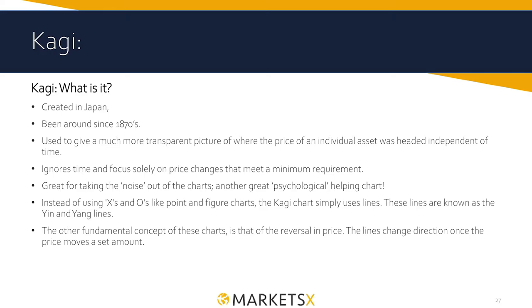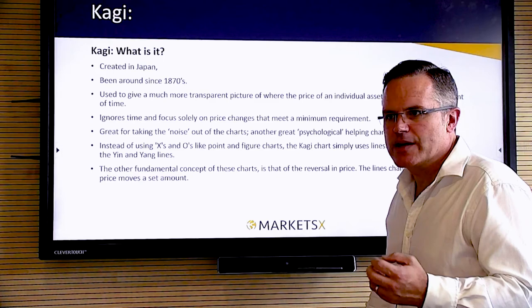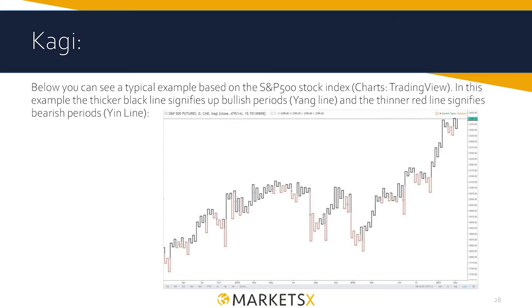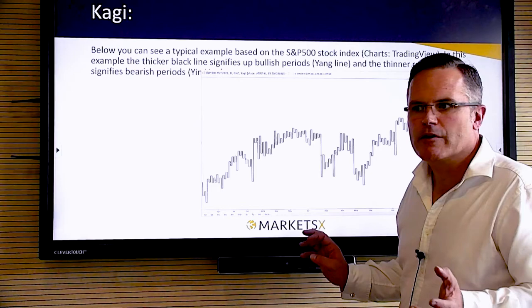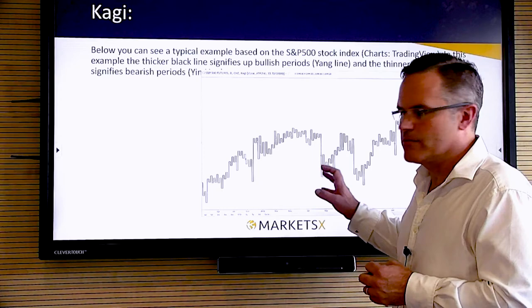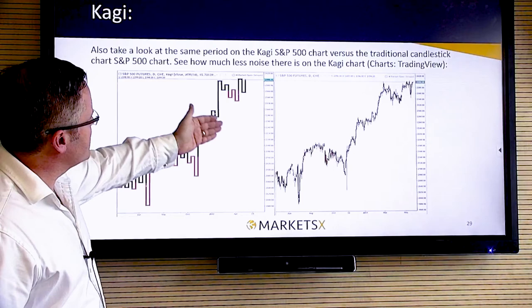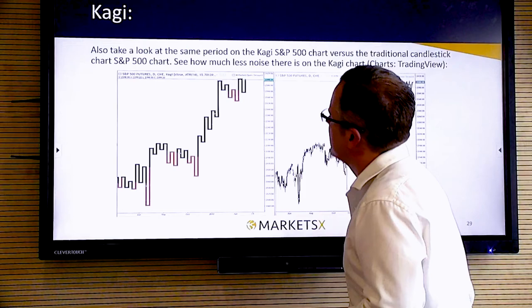Let's move on to Kagi. A similar concept to Renko but presented in a slightly different way — it's been around since the 1870s. It's all about yin and yang, and again it takes out a lot of the noise of trading, similar to the Western point-of-figure chart. It takes out time from the equation. Here's the S&P 500 — black being bullish, red being bearish. When it goes from red to black we buy, and black to red we sell; that's the simple approach, though I'd add other tools on top for confirmation.